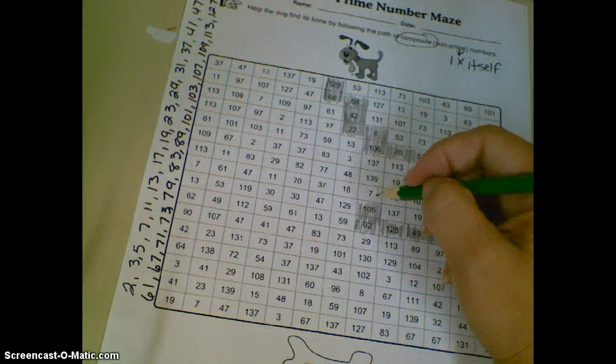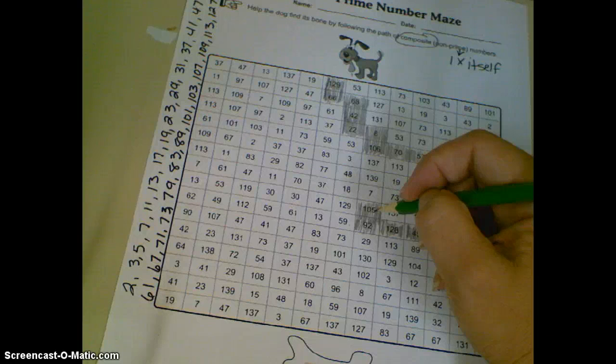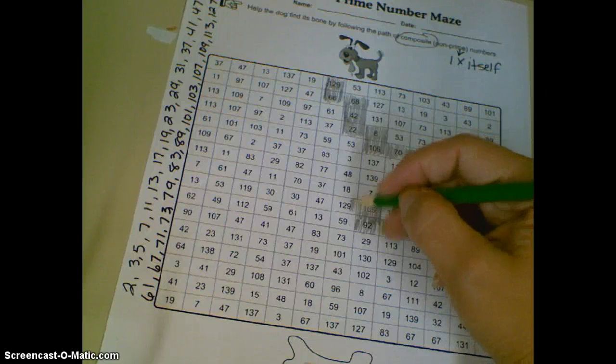However, 7 is prime, 137 would hardly make sense because it's going the wrong way. So it must be 129, and that one looks familiar. Do you remember 129 from way up at the top?